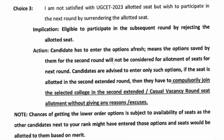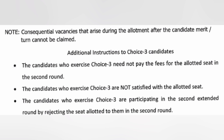The only problem with Choice 3 is that you are rejecting the old seat, which means there is a risk that a new seat may not be available and you may not get any seat at all. That is the risk for those doing Choice 3. However, Choice 3 students can do a fresh entry, and students who are not allotted any seat can also do a fresh choice entry for college priorities and can add new colleges.